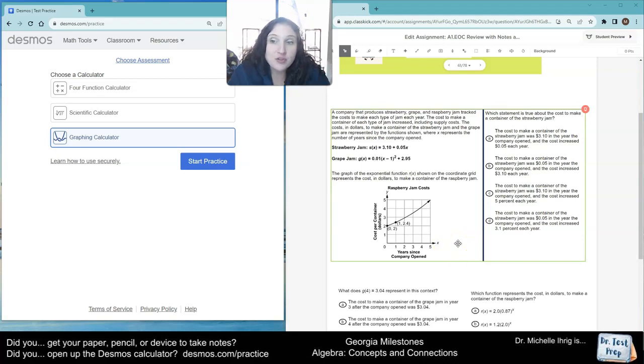The company that produces strawberry, grape, and raspberry jam tracked the cost to make each type of jam each year. The cost to make a container of each type of jam increased, including the supply costs. The cost in dollars to make the container of strawberry and grape jam are listed below, where X represents the number of years, and then the exponential function shows the raspberry jam. So that was nice of them to get S for strawberry, G for grape, and R for raspberry.